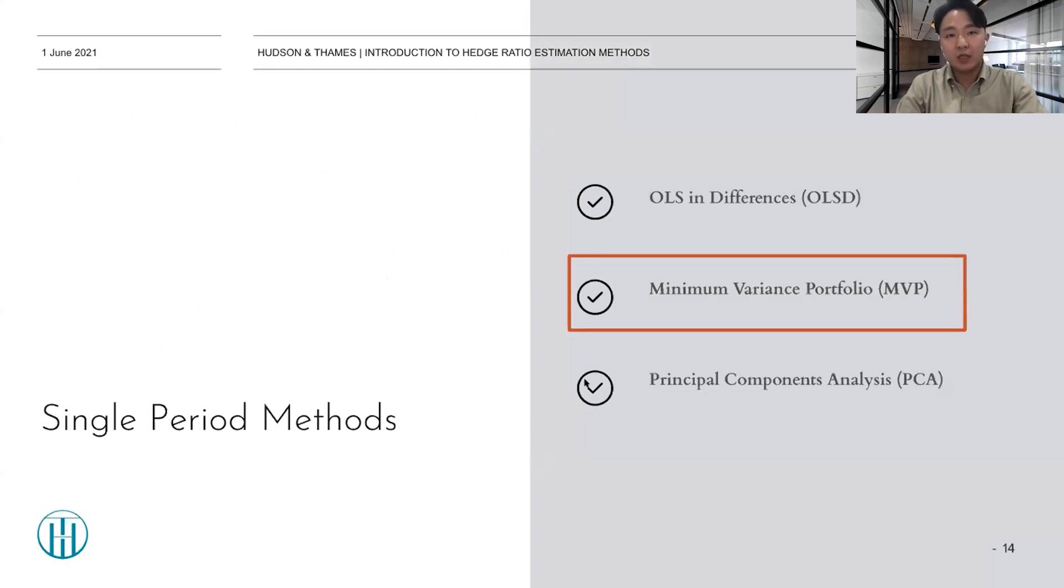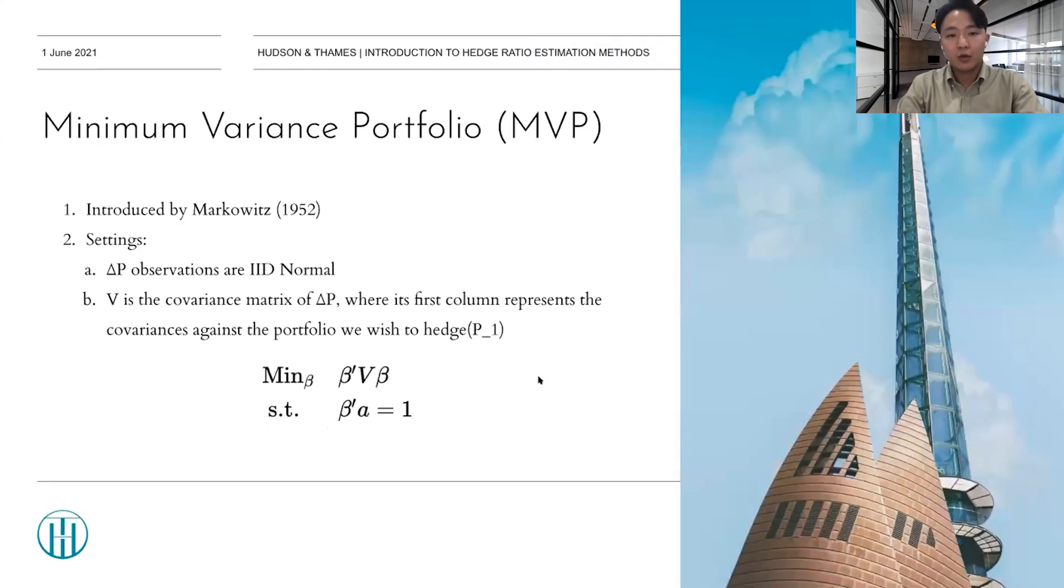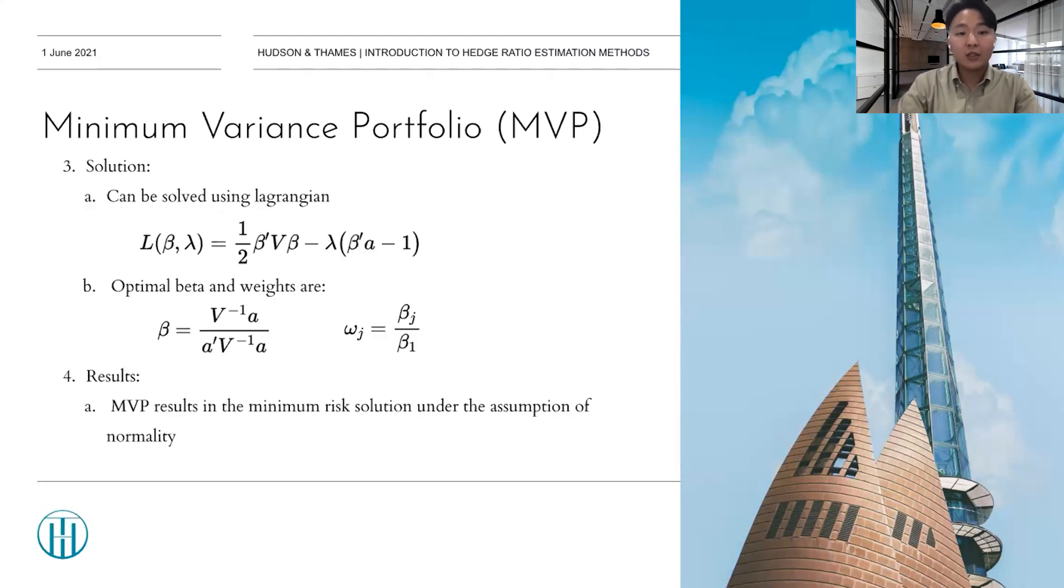And next is the MVP, minimum variance portfolio. It is introduced by Markowitz, and settings are as follows. It assumes that delta P observations are IID normal, and here, the V is the covariance matrix of delta P, where its first column represents the covariance against the portfolio we wish to hedge, P1. So, it can be solved using Lagrangian. And optimal beta and weights are as follows in the slide. If you want to know the solving process of this optimization problem, not only this, but for other methods as well, you can look into the papers in the reference slide. They showed all the proof and all the solving process. So, please take a look at it.